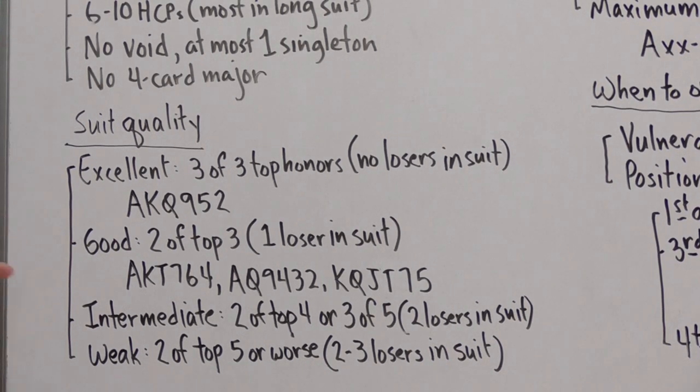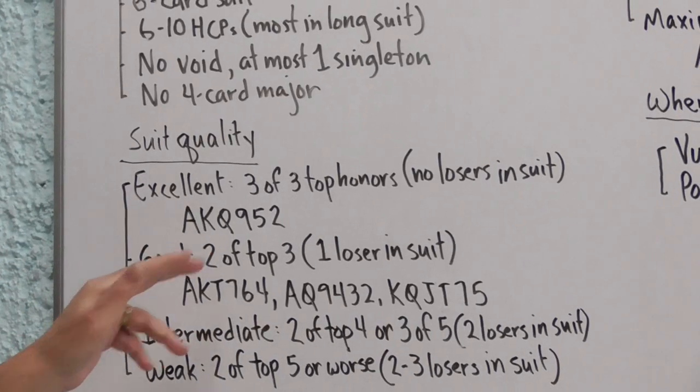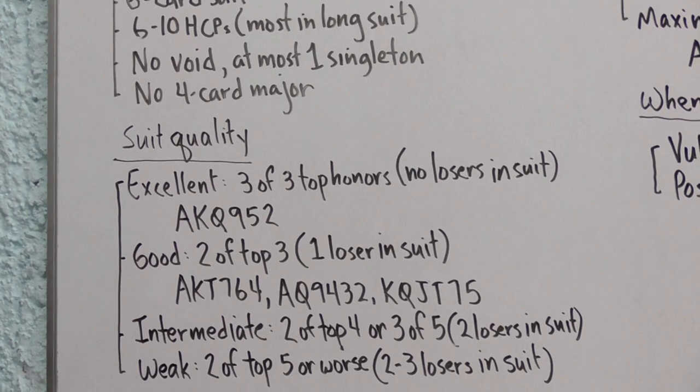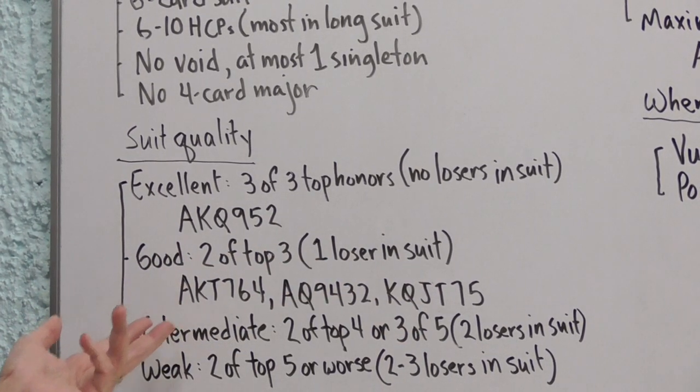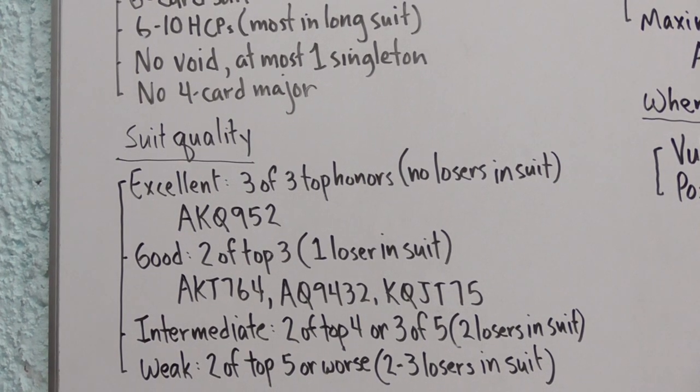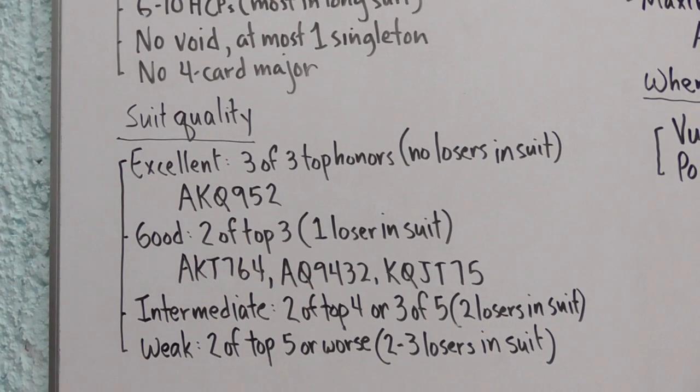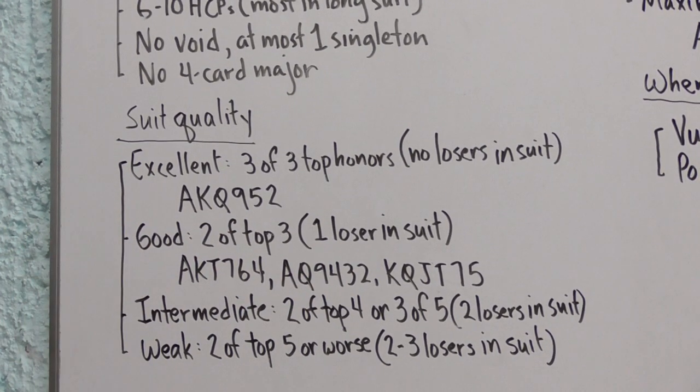We call the suit good if it's just slightly below this. We've got two of the top three honors meaning one loser in the suit and here would be three examples of such suits. This one has the ace and the king but not the queen, this one has the ace and the queen but not the king, and this one is missing the ace but has the king and the queen, so these would all be considered good suits.